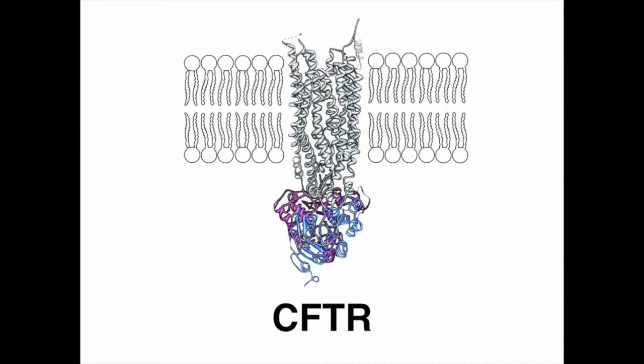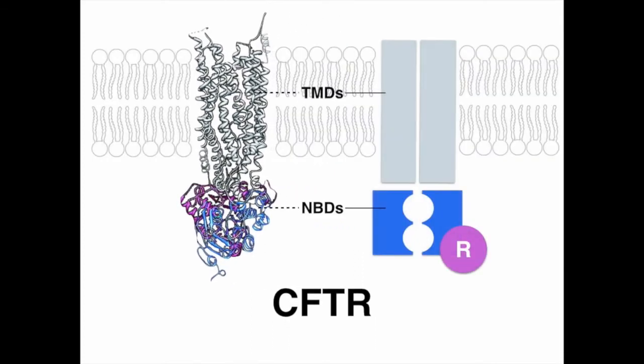CFTR is a member of the ABC transporter superfamily. Almost all members in this family function as active transporters that utilize ATP hydrolysis as free energy to transport substrate across the plasma membrane against an electrochemical gradient. But CFTR is a bona fide ion channel enacting passive transport for chloride ions.